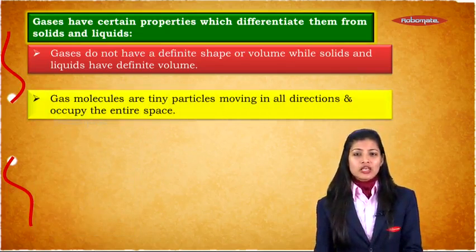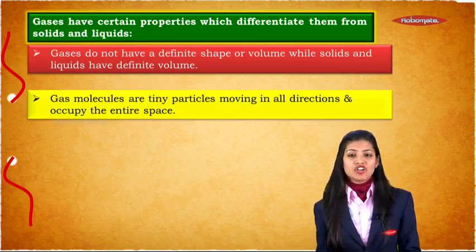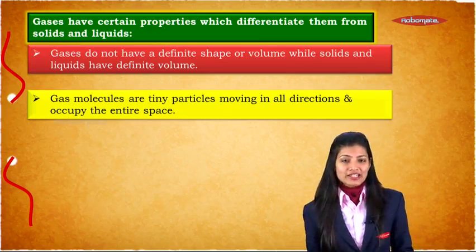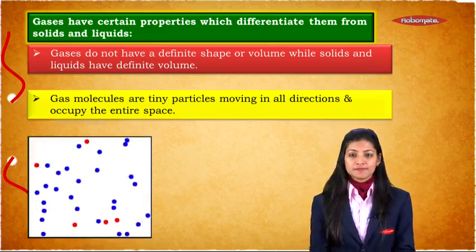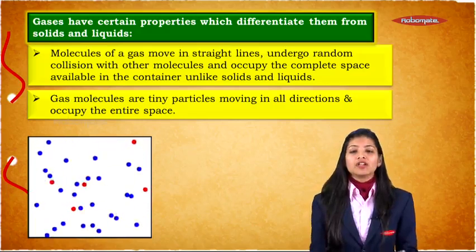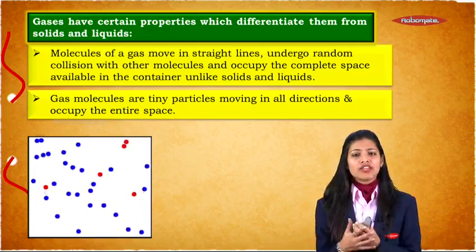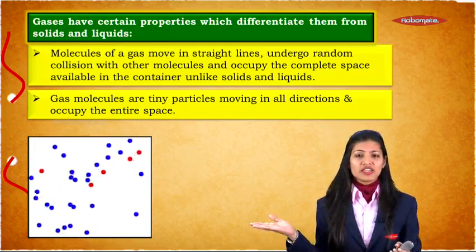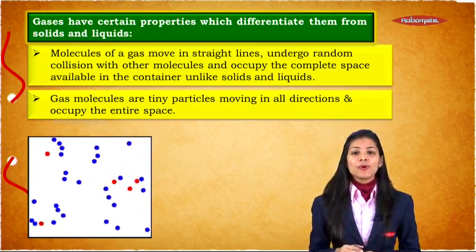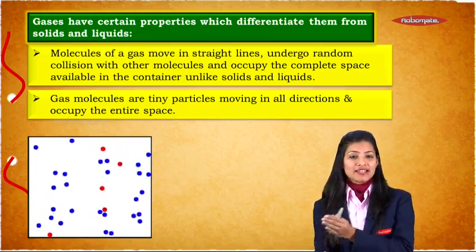Gas molecules are also said to be tiny particles moving in all directions and occupy the entire space owing to that highest amount of energy that is possessed by them. Now, the molecules of a gas move in a straight line, undergo random collision with other molecules as we can see over here and occupy the complete space available in the container unlike solids and liquids.